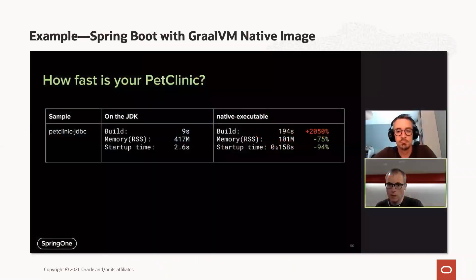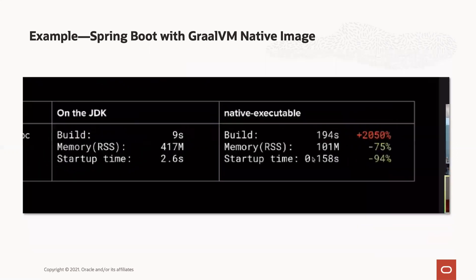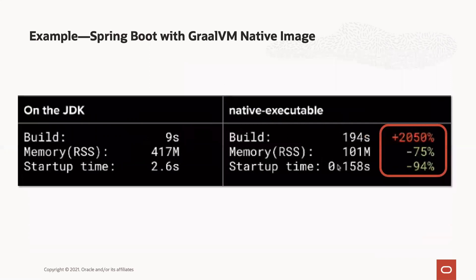To give you a taste of the fast startup and memory usage we see: Sebastian Deleuze and Andy Clement from the Spring team were working on the Spring Native project, which recently went into beta at 0.9. With the Pet Clinic application, they saw a memory reduction of 75% and startup 94% faster for the native image compiled version. Build time went up significantly because we do a lot of analysis at build time rather than leaving it to runtime.